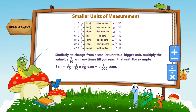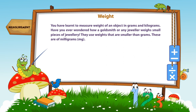Similarly, to change from a smaller unit to a bigger unit, multiply the value by 1/10 as many times. For example, 1 decameter is equal to 1/(1,000) decameter.